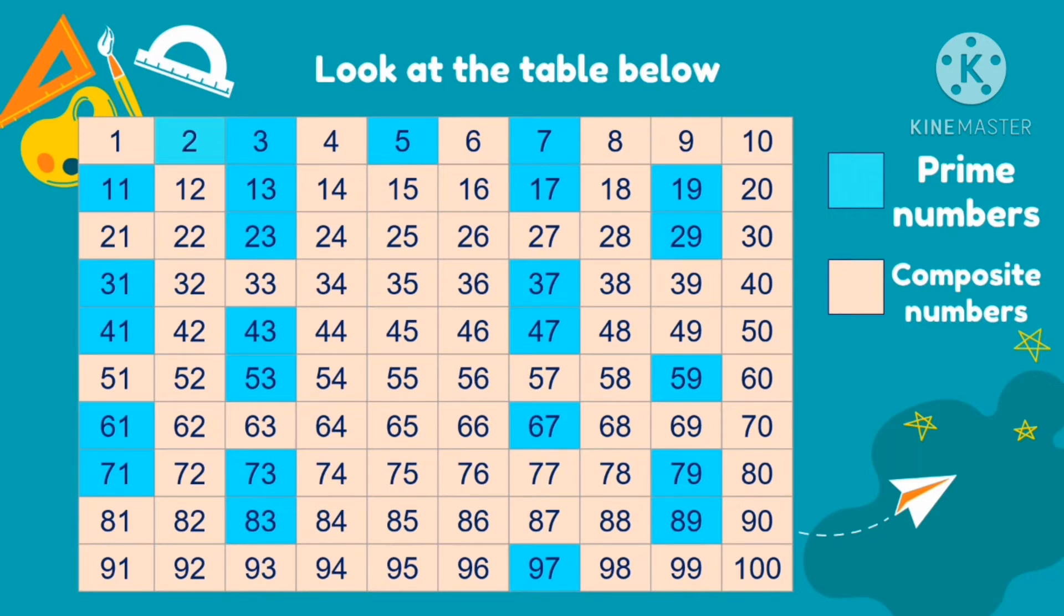Most of the prime numbers are odd numbers. What are odd numbers? So these are numbers that end in 1, 3, 5, 7, and 9.